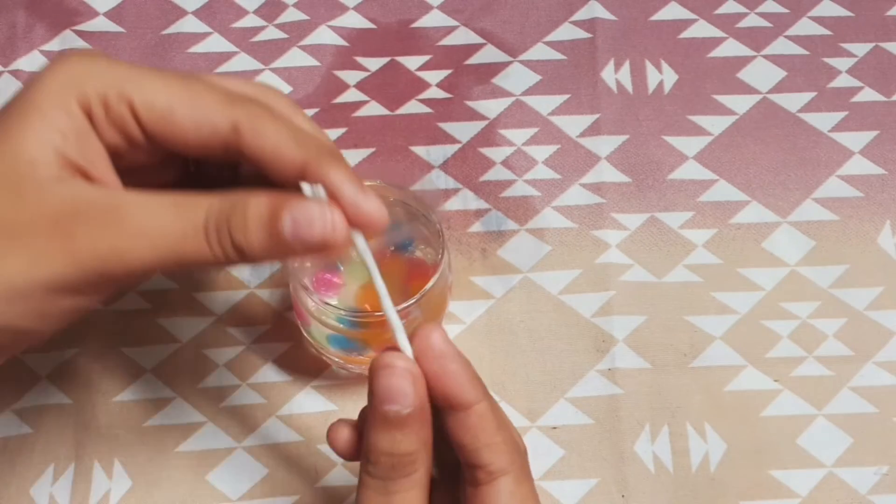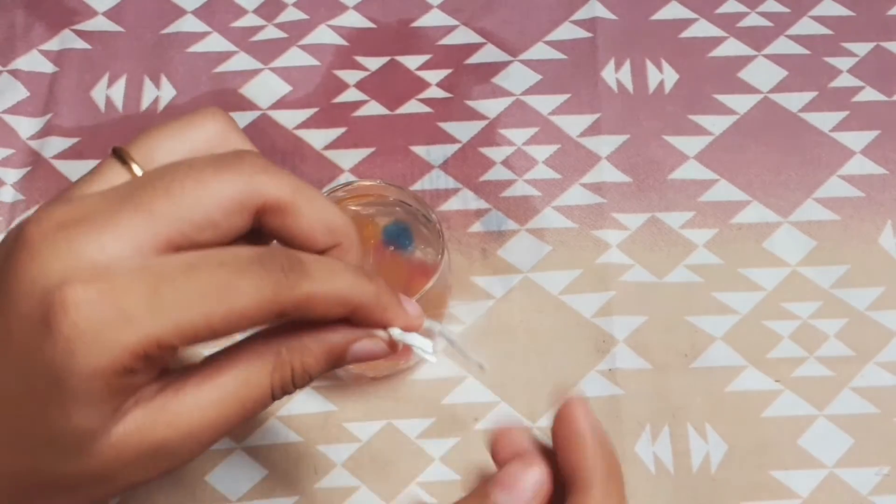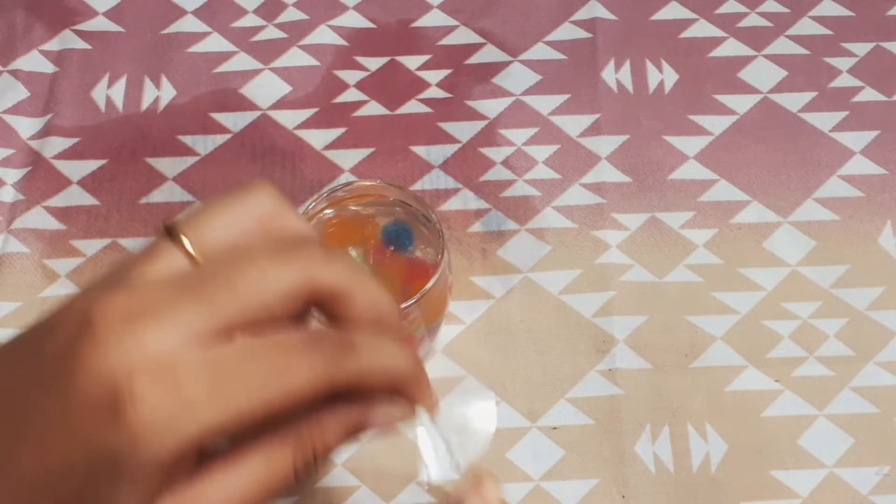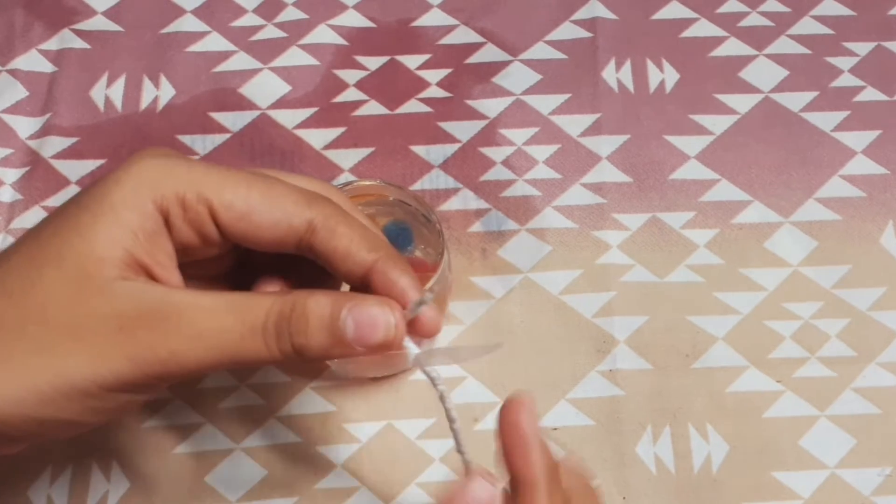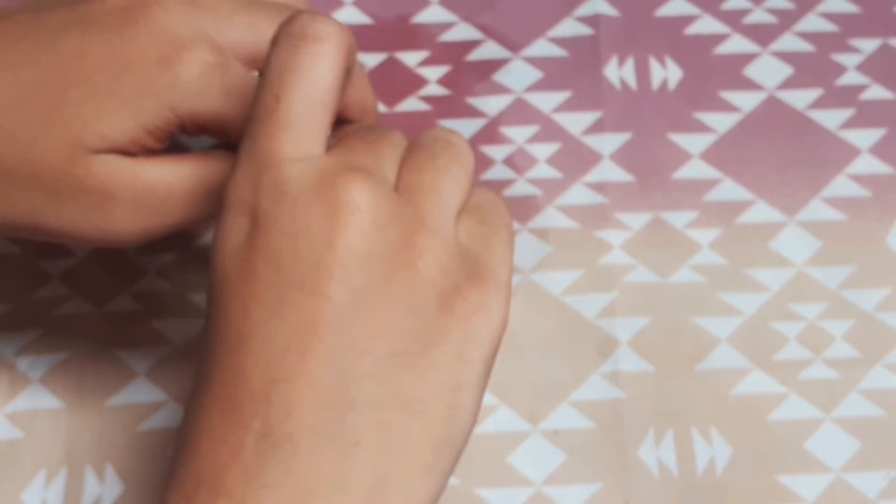Now insert that thread into that small hole. Insert well, and at the top just swirl it so it is a thin line like that.